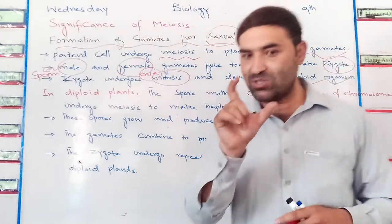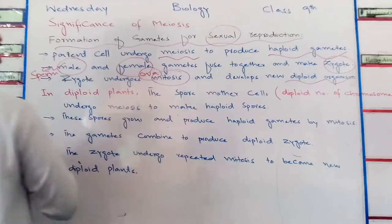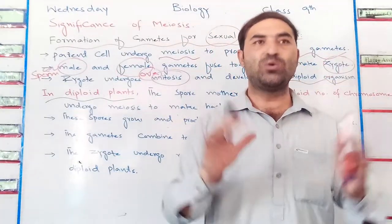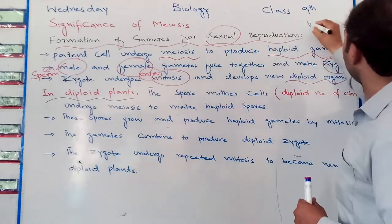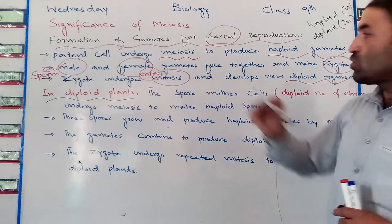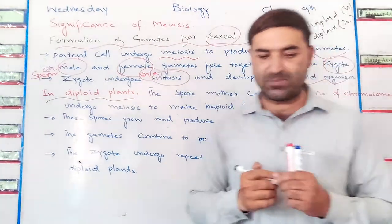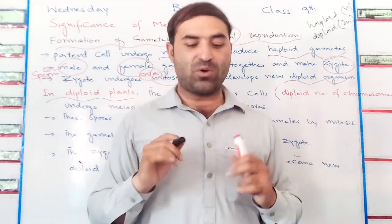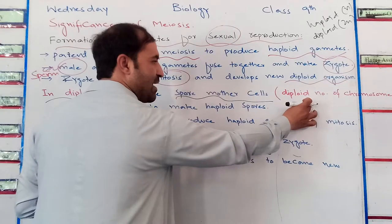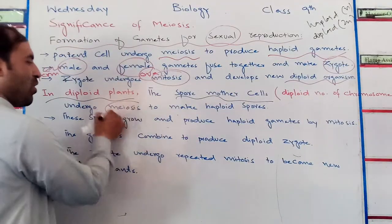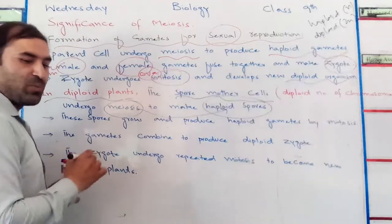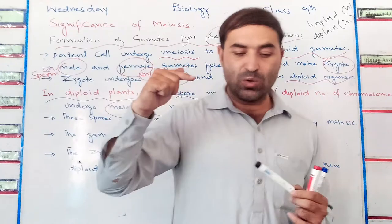Now, coming towards the formation of gametes for sexual reproduction in plants. In diploid plants — diploid meaning having two sets of chromosomes, represented as 2n, while haploid is represented as n — the spore mother cell, which has a diploid number of chromosomes, undergoes meiosis to produce haploid spores.